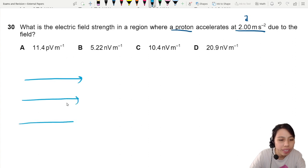Imagine you have an electric field and in it you have one little proton. It experiences an electric force, that's why it begins to accelerate at 2 meters per second squared.